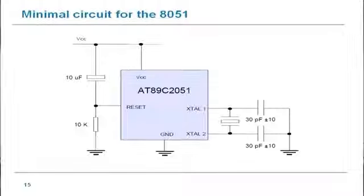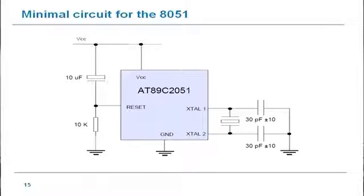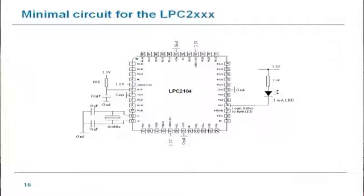Let's start with the currently more common 32-bit microcontroller platform. We looked at the minimal circuit for making an 8051 operate. People sometimes think using a 32-bit microcontroller will be much more complicated. This is a complete circuit for a 32-bit microcontroller — it's not significantly more complicated. There's a little bit more going on, but not very much. This one includes an LED we can flash, and that's the main additional bit of circuitry.